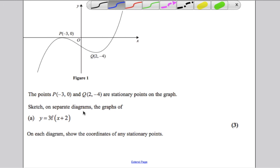We need to know what 3f of x plus 2 means. The 3 is outside the brackets, and the 2 is inside the brackets. Anything outside the brackets does what you think it should. You're multiplying by 3, so you're stretching in the y direction by a factor of 3. Anything inside the brackets does the opposite to what you think. You're adding 2, so you're shifting to the left by 2 units.